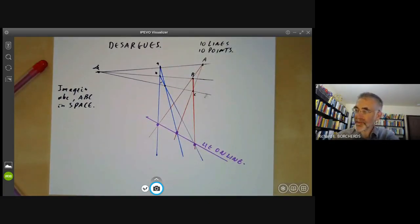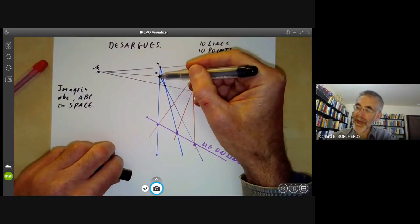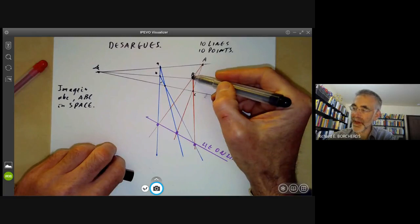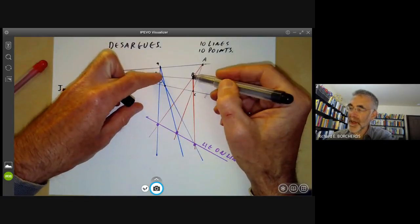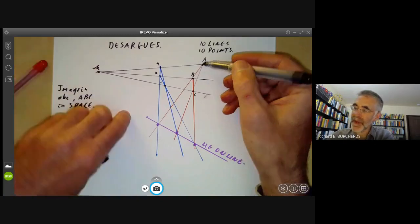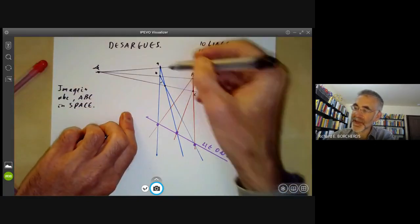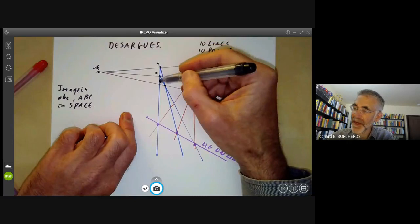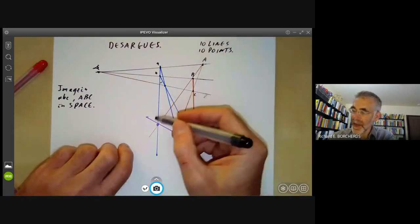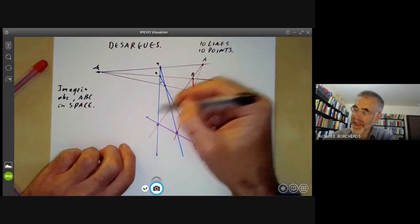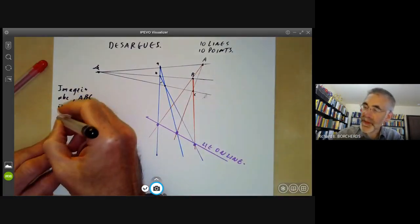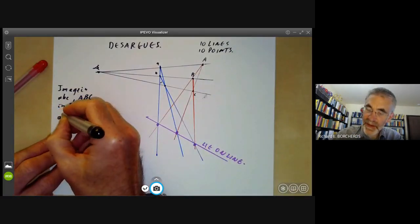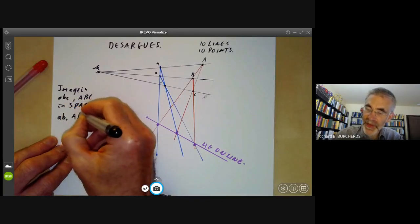We obviously can't do this in two dimensions because then the planes would have to be the same. And now we notice that we've got a line little a little b here and a line big A big B here. And we notice these lines in space must actually meet because the lines through the two A's and the lines through the two B's meet, which means that these two lines are actually in the same plane. So these two lines must meet at a point in space. So we would say that then the lines AB and A'B' meet.